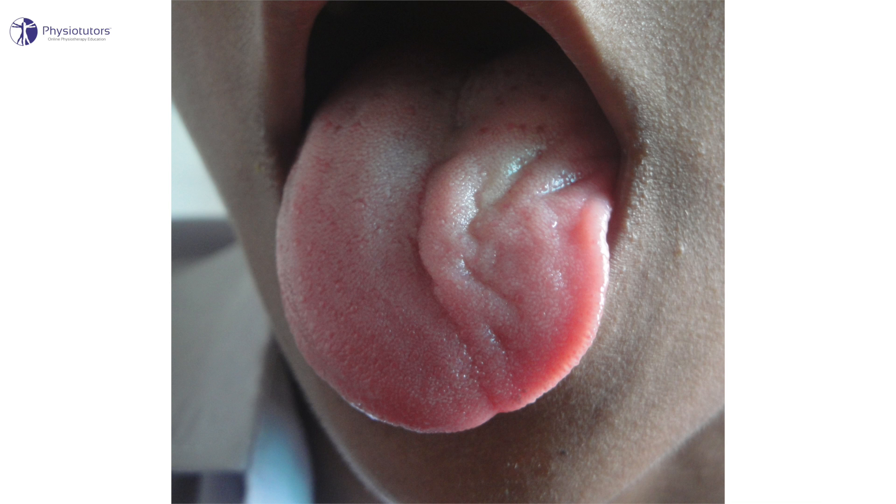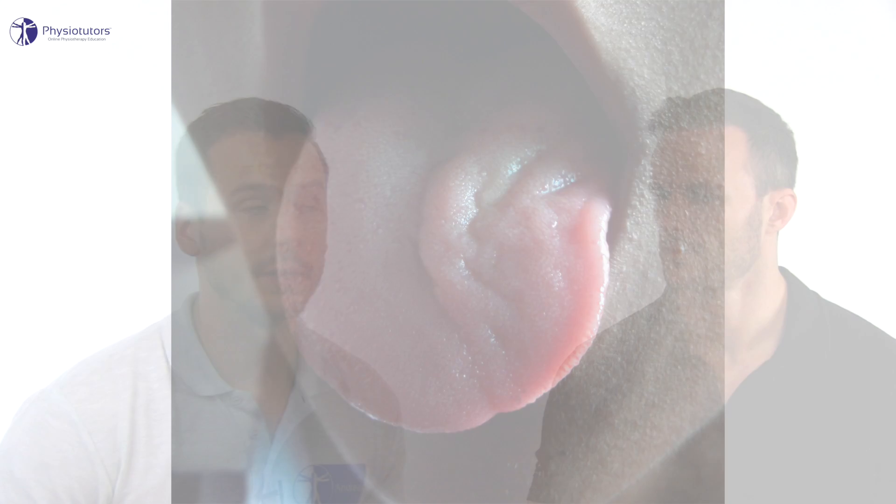Ask the patient to stick out their tongue and check for deviations. In unilateral hypoglossal nerve palsy, the tongue will deviate to the site of the lesion.